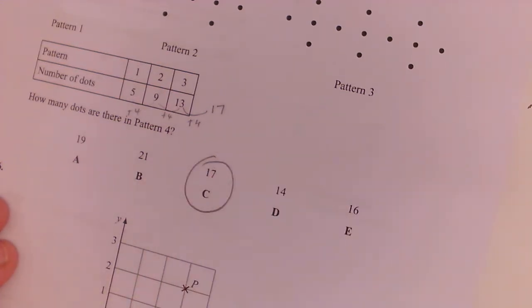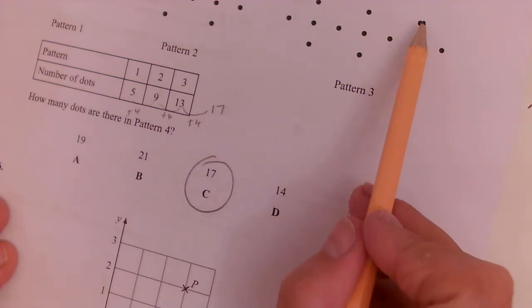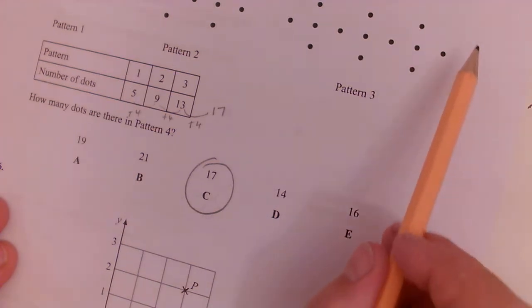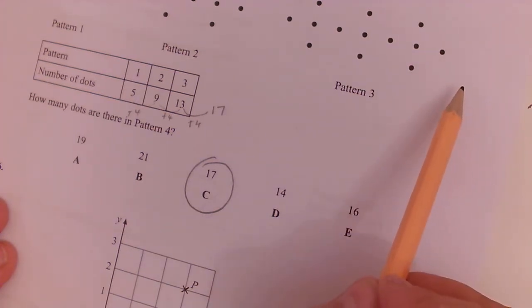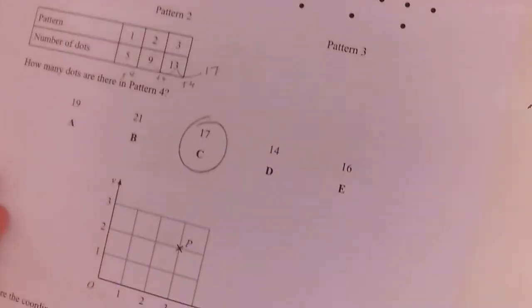So if we add on another four, we would get 17. So the answer is C. But again, you could draw that out if you wanted to. So we would add on one, two, three, four more. So one, two, three dots down and one more.